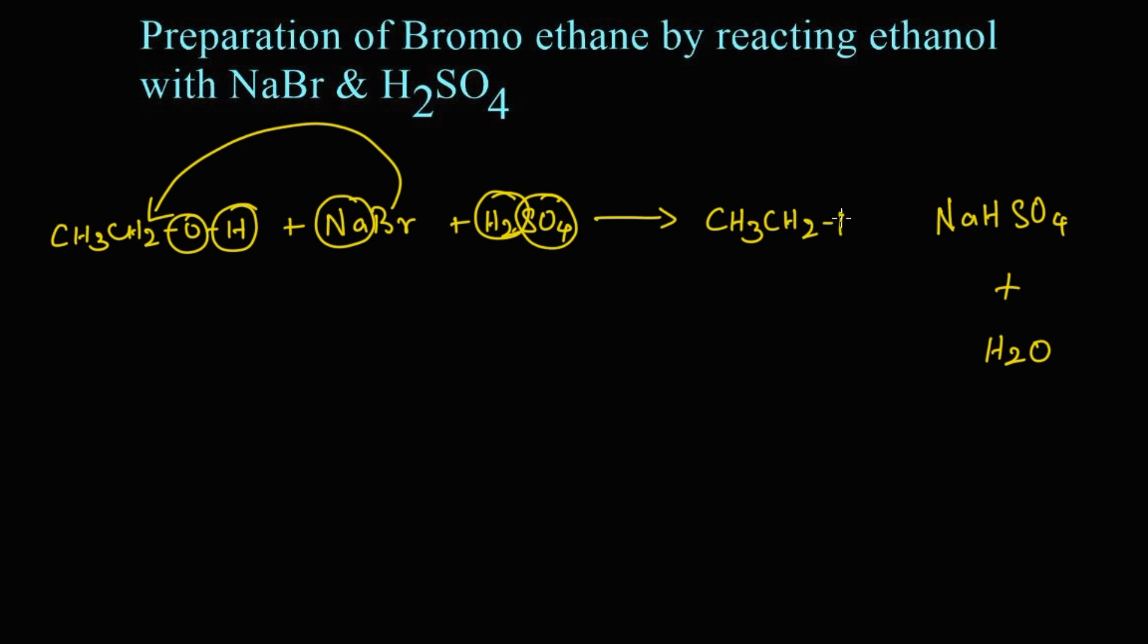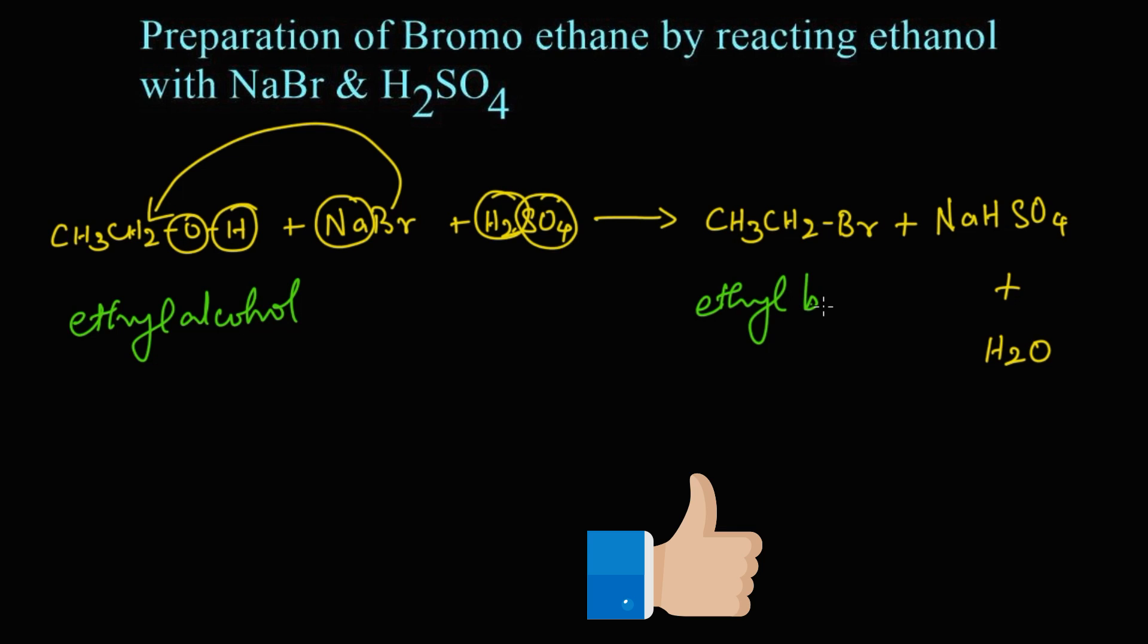Let's write the names for these structures. Ethyl alcohol or ethanol reacts with sodium bromide and sulfuric acid to give ethyl bromide as the product, along with sodium hydrogen sulfate and water.